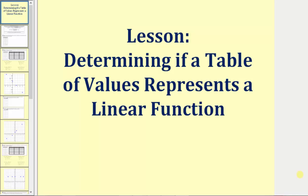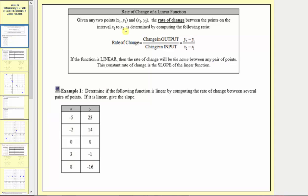Welcome to a lesson on determining if a table of values represents a linear function. Let's first talk about the way to change between two points or two ordered pairs. Remember when we have ordered pairs, the first values are the inputs — x sub one and x sub two — and the second values are the outputs — y sub one and y sub two.